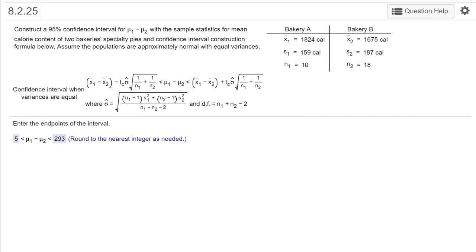Hi, this is Dr. Don. I have a problem out of chapter 8 when we're dealing with two sample hypothesis tests. In this particular problem, we're given summary data here: the sample means, the sample standard deviations, and the sample sizes for two samples.